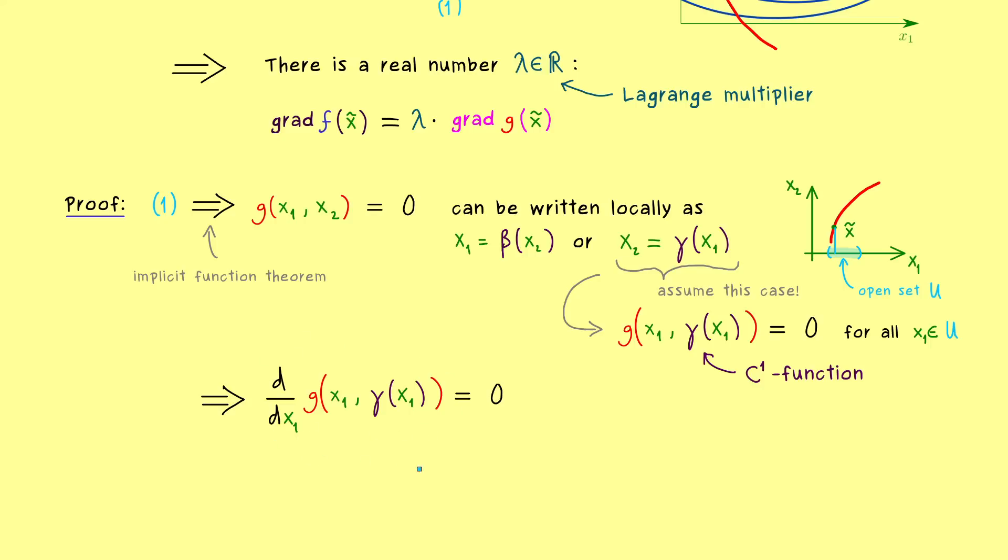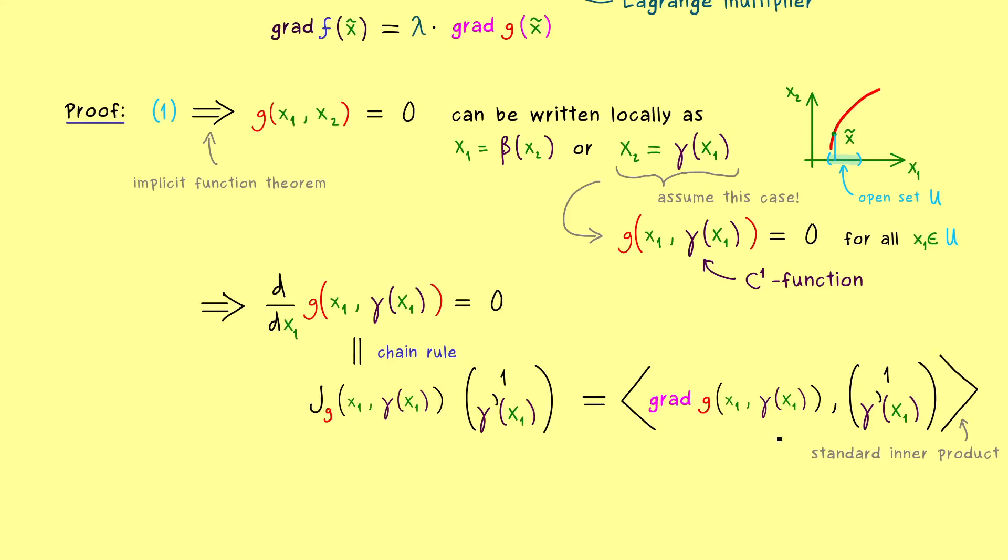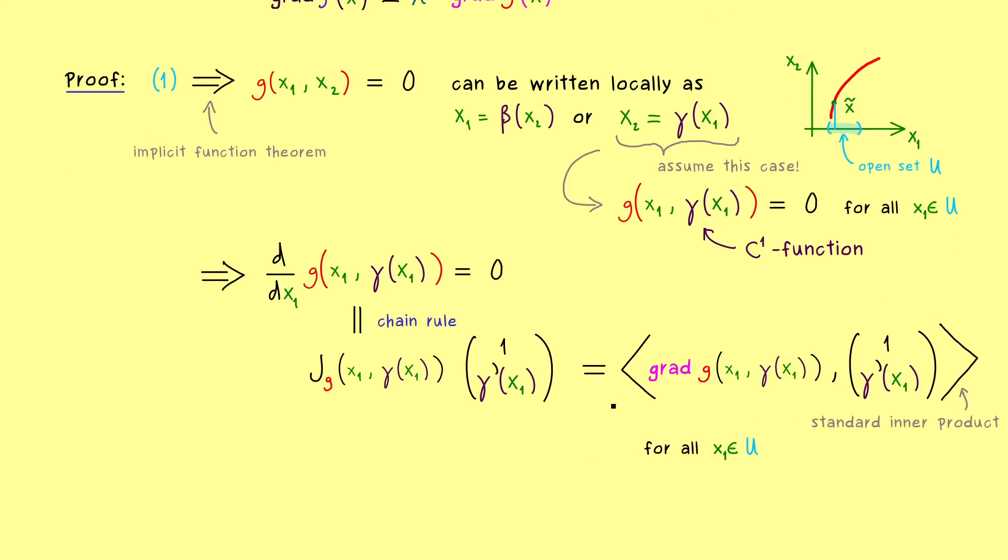Hence it's allowed to differentiate both sides of the equation. Indeed, we have a function of one variable x₁, so we can calculate the derivative with respect to x₁. On the right hand side we still have 0, but on the left we can use the chain rule. The chain rule works because we have a composition of function g with this function inside. So we get the Jacobian of function g evaluated at the same point, then multiply this matrix with the Jacobian of the function inside, which is simply a 2×1 matrix: 1 and γ prime. Moreover, instead of the Jacobian we can use the gradient of g. If we do that we have the standard inner product here, and by our calculation this inner product is 0. So in other words, the gradient of g is orthogonal to this vector, and this orthogonality holds for all points in open set U.